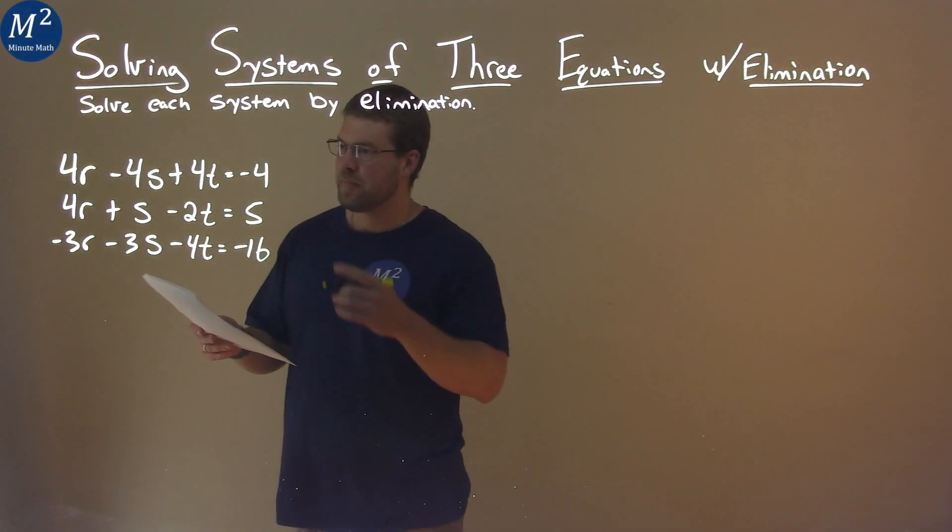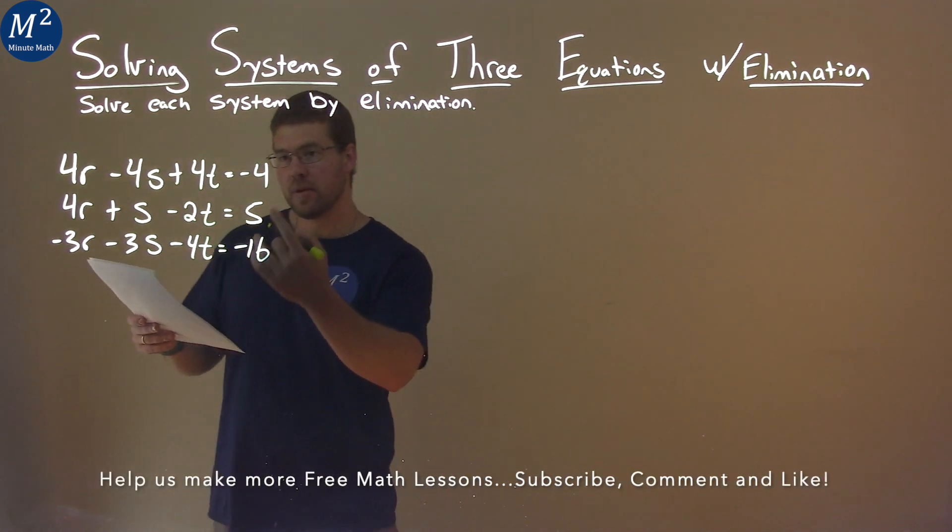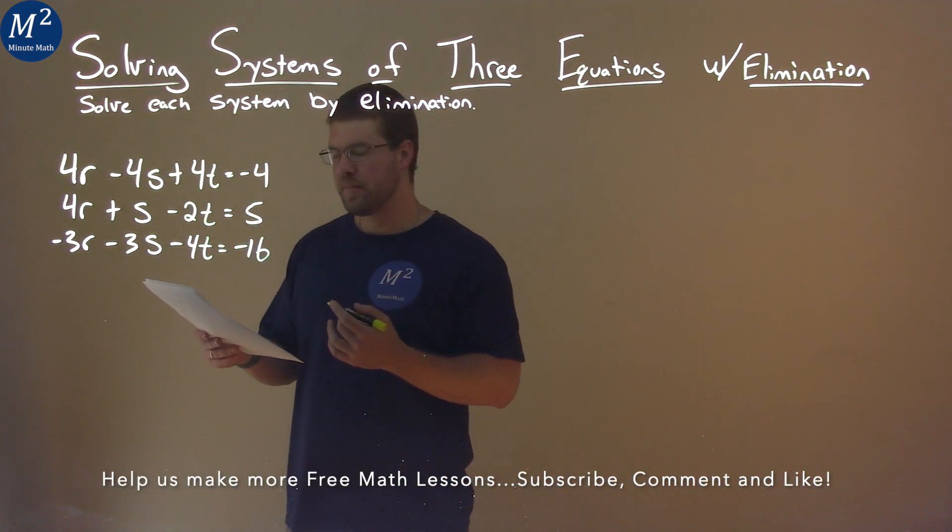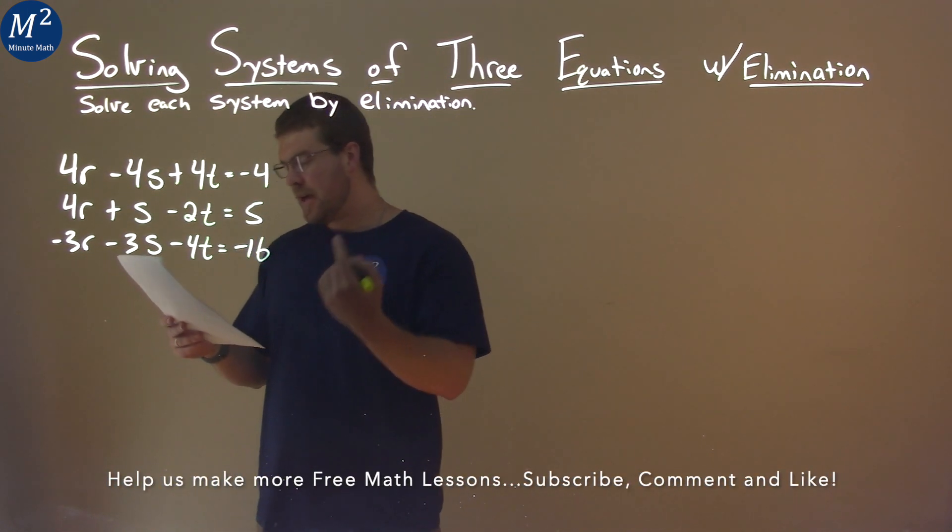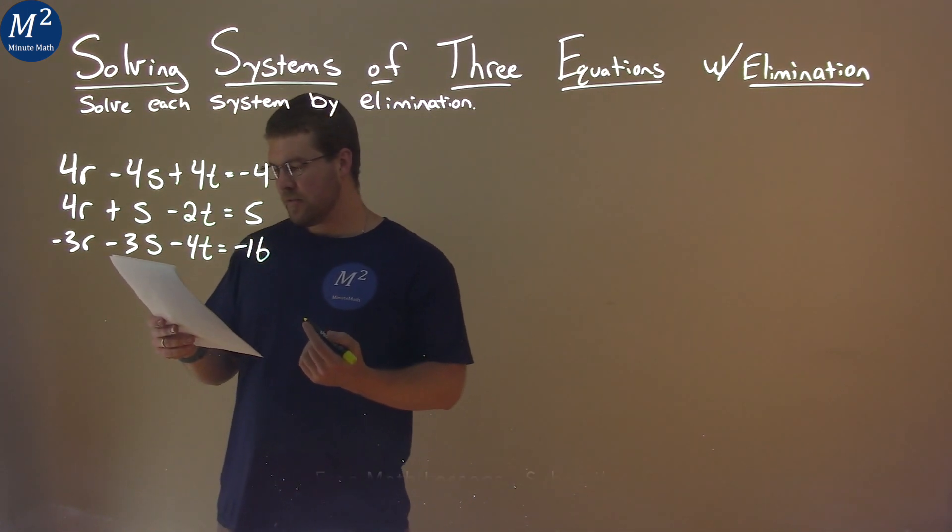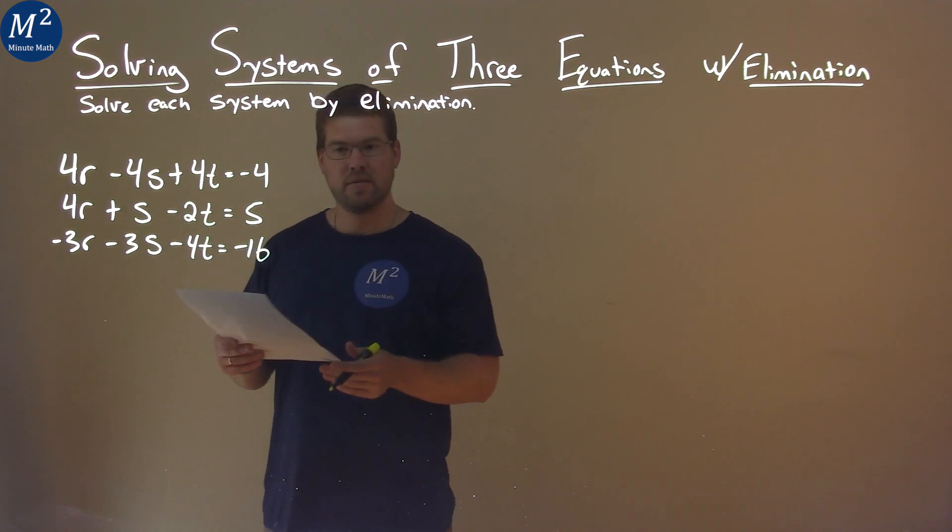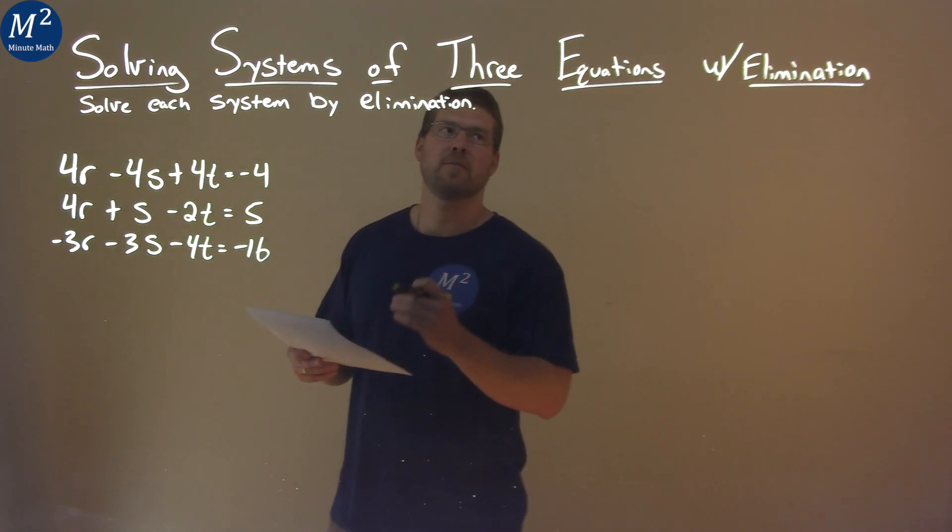We're given this problem right here. 4r minus 4s plus 4t equals negative 4. 4r plus s minus 2t equals 5. And negative 3r minus 3s minus 4t equals negative 16. And we need to solve this by elimination.